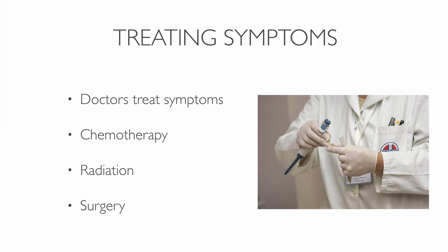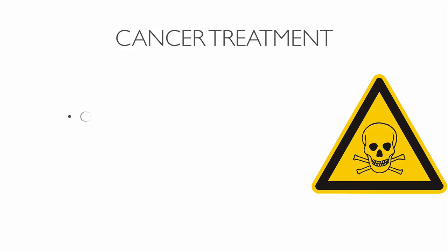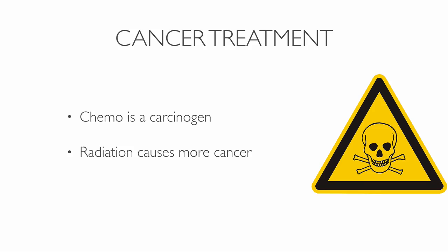When they remove cancer, it usually comes back, because they haven't removed the poisons that led to cancer. Many people who go through chemotherapy die within a five-year period. Chemo is extremely toxic to the body and is carcinogenic, meaning it can cause more cancer. Radiation also causes more cancer and is a poor band-aid. Surgery doesn't address the root cause either — it's like cutting the weed without removing the roots, so it just grows back. Using conventional treatment methods makes no sense, because if cancer cells exist because of toxins, why would you add more toxins to your body?